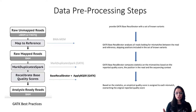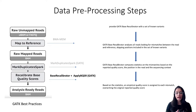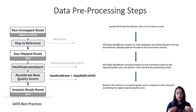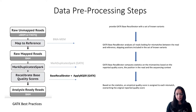In BQSR, we provide the GATK BaseRecalibrator with a set of known variants. It analyzes all reads looking for mismatches between the read and the reference, skipping positions included in the known variants file. Statistics are computed on mismatches based on reported quality score, position in the read, and sequencing context. An empirical quality score is then assigned, overriding the original. BQSR is optional but highly recommended. If no known variants are available, they can be generated by bootstrapping — calling variants first without BQSR, filtering to get high-confidence variants, then using those as input.